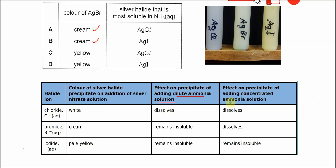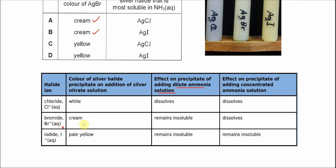For silver bromide, when we add dilute ammonia solution, it is insoluble. But when we add concentrated ammonia solution, the silver bromide will dissolve. This means the solubility of silver chloride is greater than silver bromide.